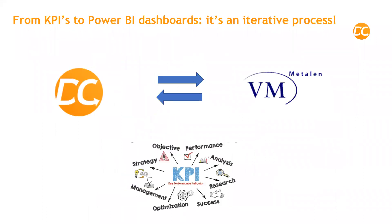Before we get into the detail of each of the six reports we've selected, it's important to say that the process of developing reports is an iterative process between Dynamics DC and the company's managers. Questions like how you want to visualize the information, what data should be selected, and what frequency the data should be updated need answers — and this goes back and forth between Vanmierbeek Metalen and Dynamics DC. Going back and forth like this makes the results even better. We have developed all of these reports in the last five months, but they're still work in progress.